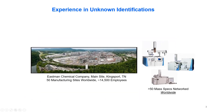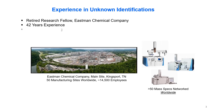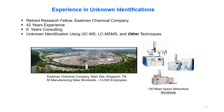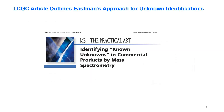My experience in unknown identifications was obtained during my time at Eastman Chemical Company in Kingsport, Tennessee. Eastman Chemical has 50 manufacturing sites worldwide and we employ a variety of mass specs that are networked for problem solving. I am a retired research fellow from the company. I have 42 years of experience there and six years in my consulting business. My passion has always been unknown identifications using GCMS, LC-MSMS, and other techniques. An article in LCGC outlines Eastman's approach for unknown identifications.